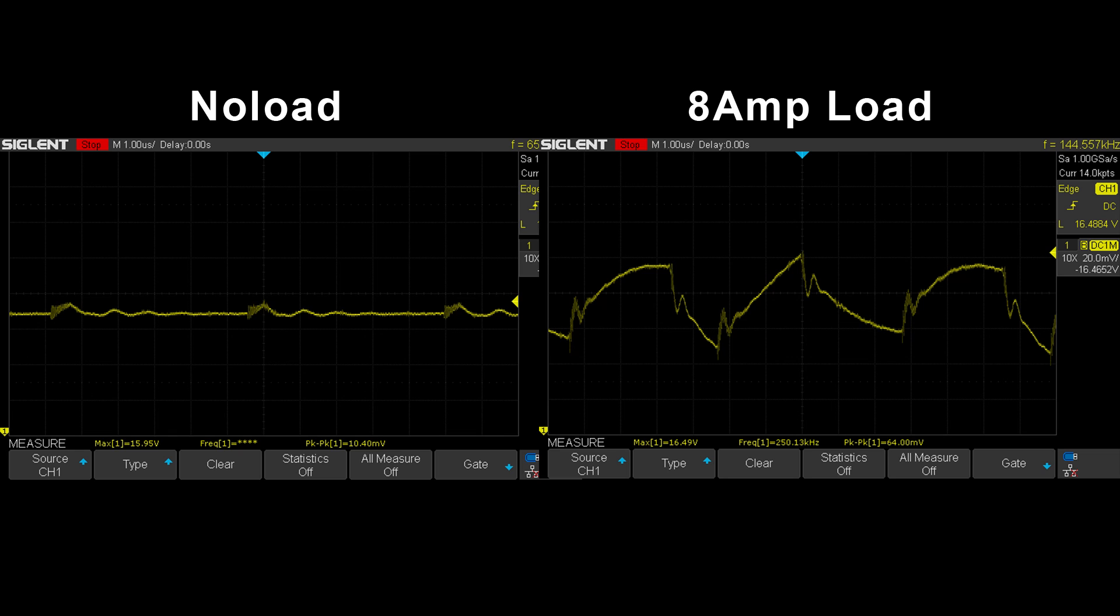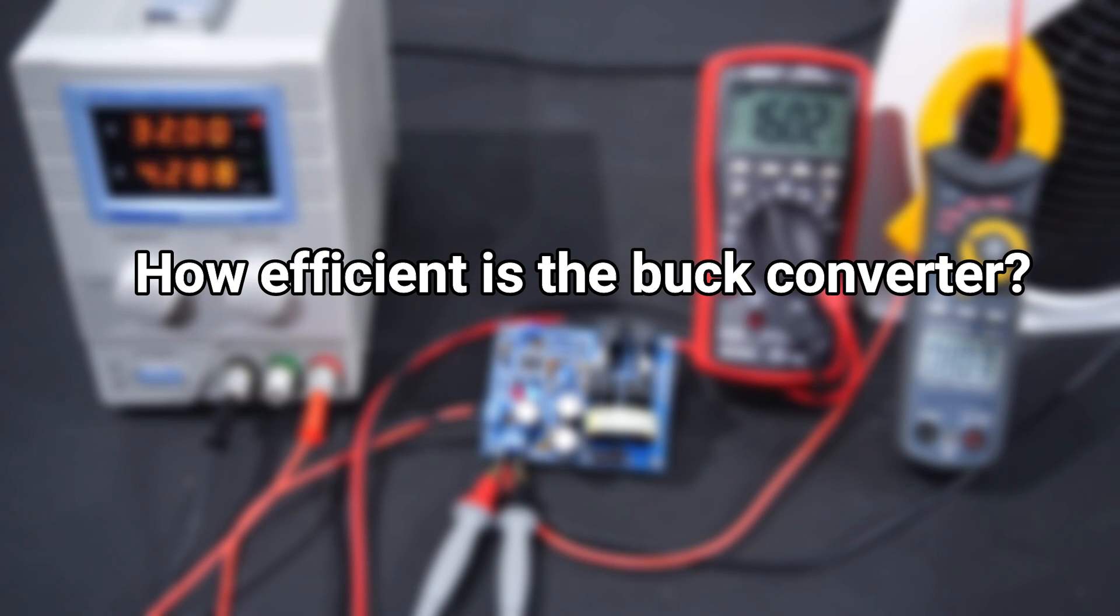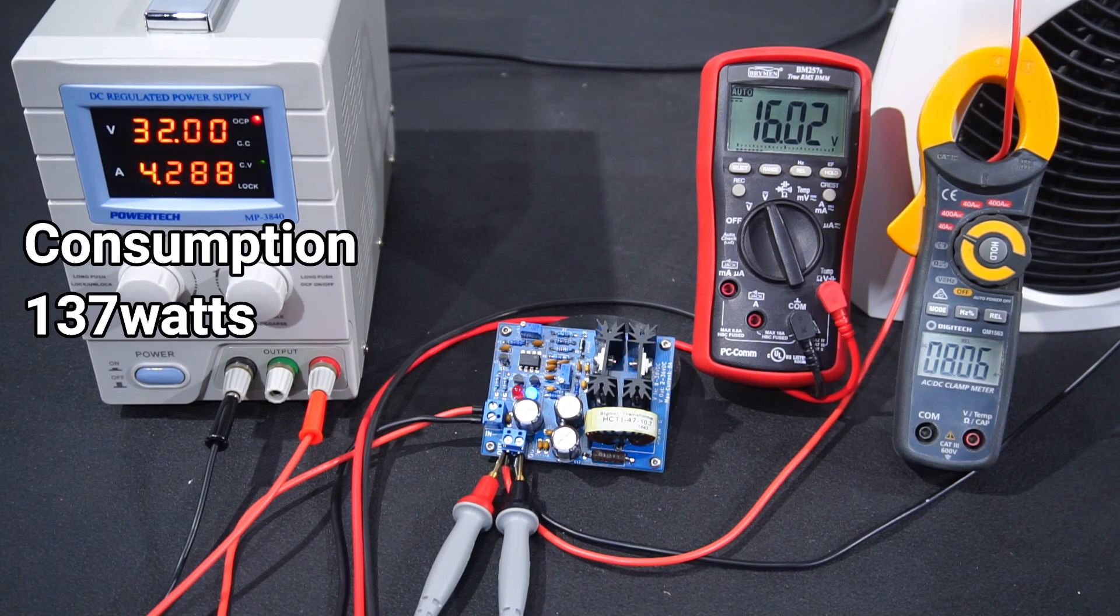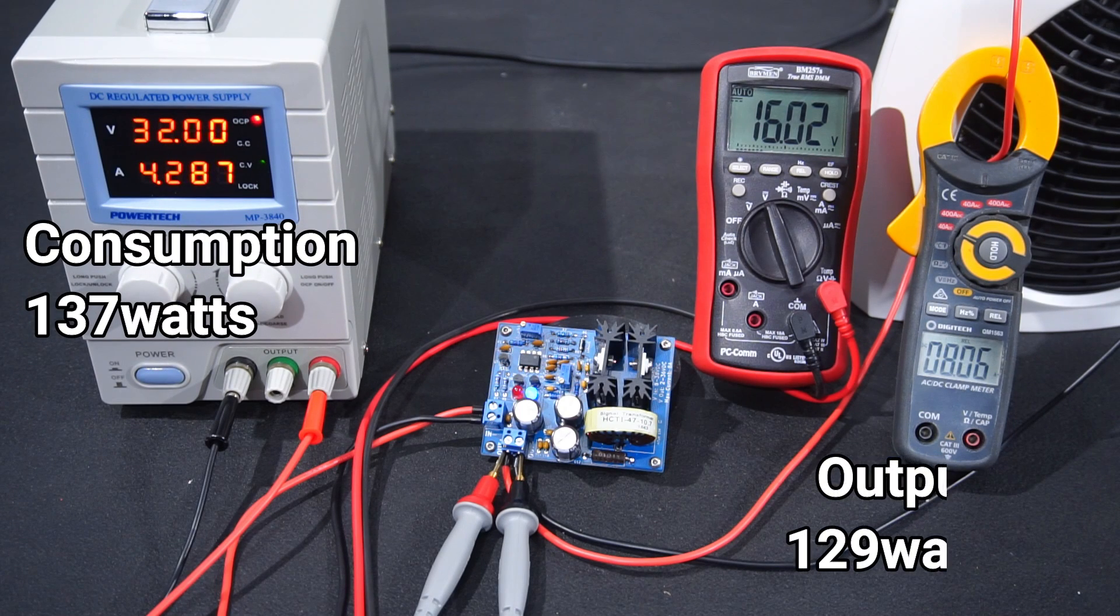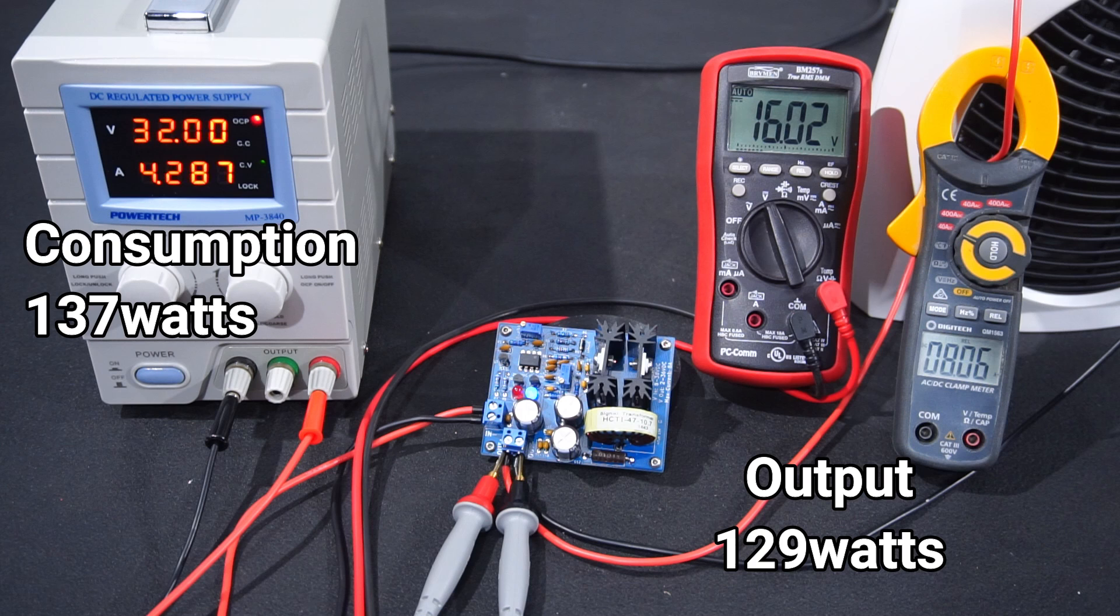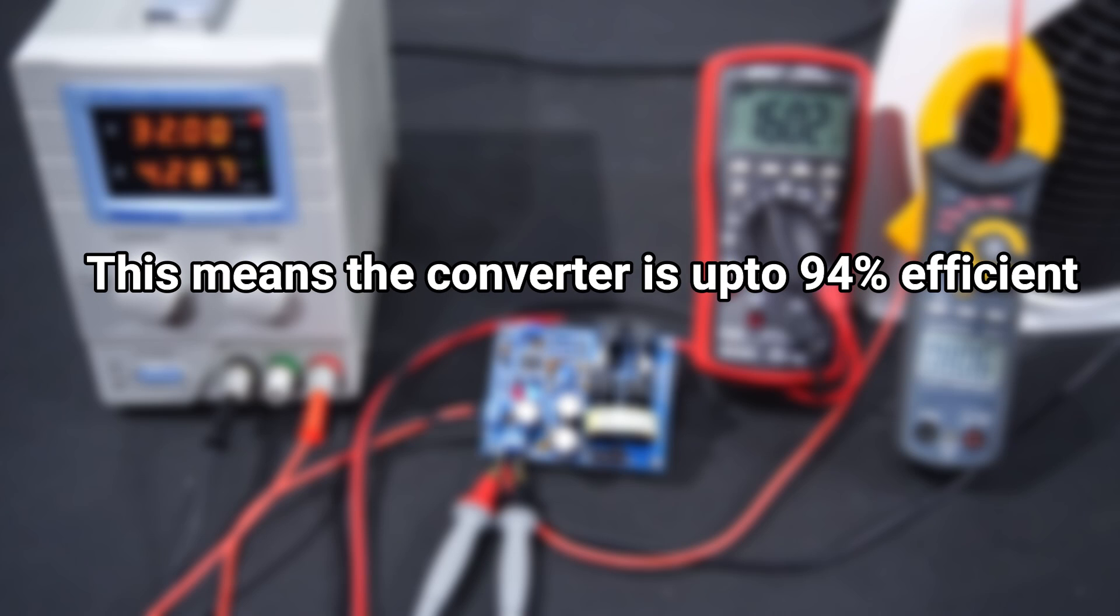And how about efficiency? Well in this test setup the buck converter is consuming 137 watts of power and outputting 129 watts, which means only 6% of power has been lost. This means the converter is up to 94% efficient in this test.